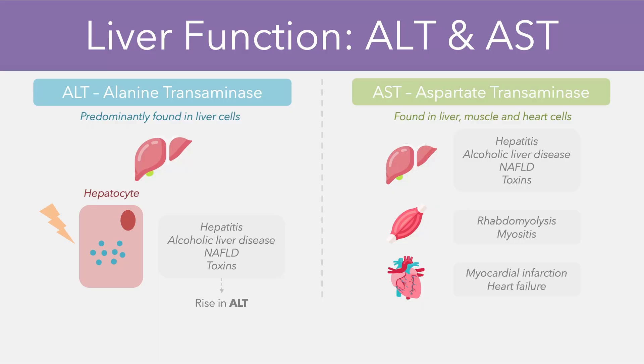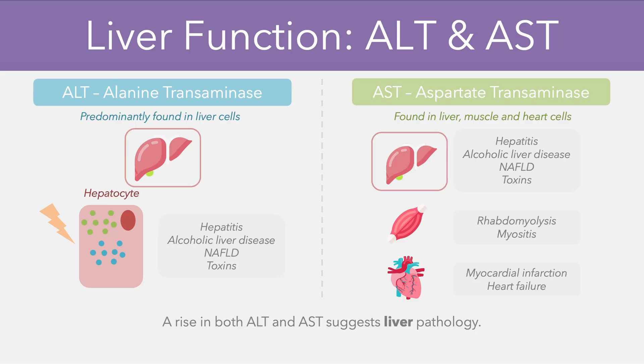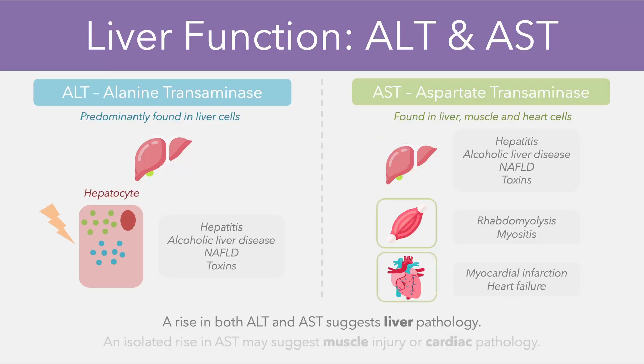One thing you might have noticed is that both ALT and AST are found inside the liver, so the hepatocytes carry both of these enzymes. This means that if we have a combined rise in ALT and AST, it's highly suggestive of liver pathology. Alternatively, if we only have a rise in our AST value, it's more likely to be a muscle injury or cardiac pathology — because if we truly had a liver injury, we would expect both enzymes to be raised, rather than just one.